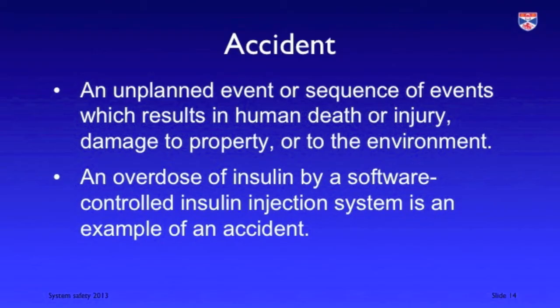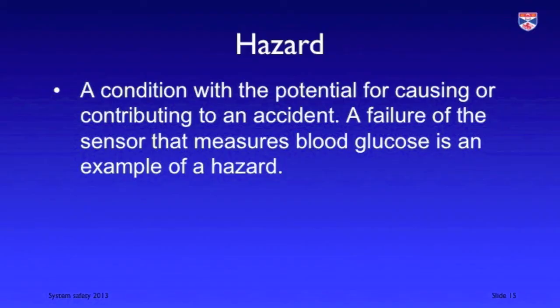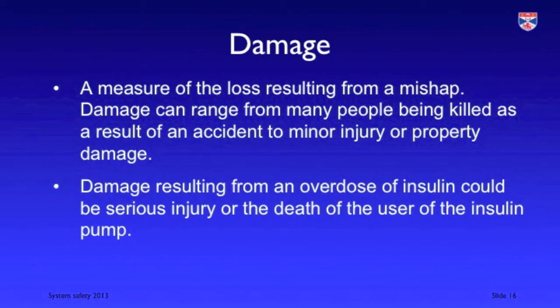When we talk about safety, there are three important terms to understand. An accident is when something actually goes wrong and causes damage or injures people. A precursor to an accident is what's called a hazard — it's a state of an executing system that has the potential to cause an accident, though it doesn't necessarily follow that it will, in the same way that errors in state do not necessarily cause system failures. The damage done in the event of an accident is a measure of the extent of the injury or loss that accrues.